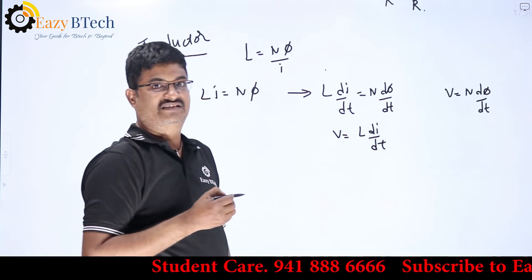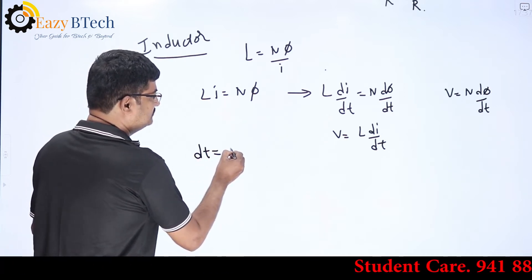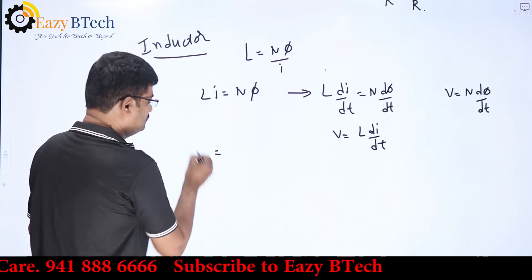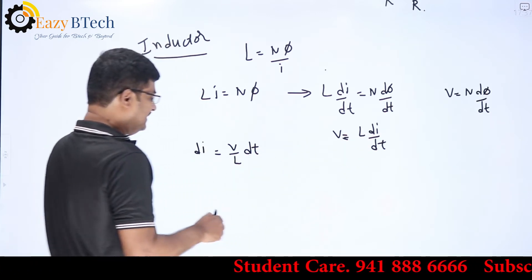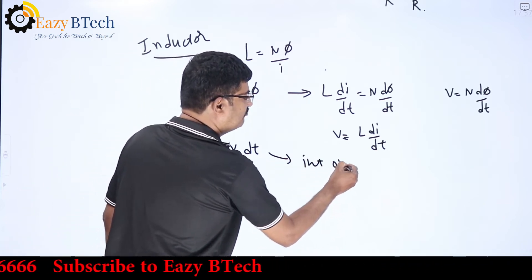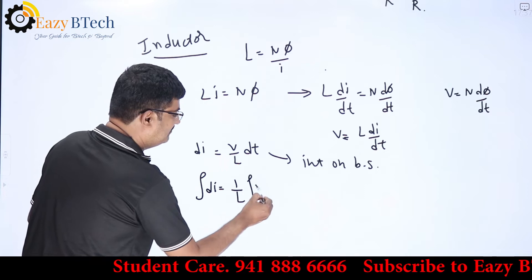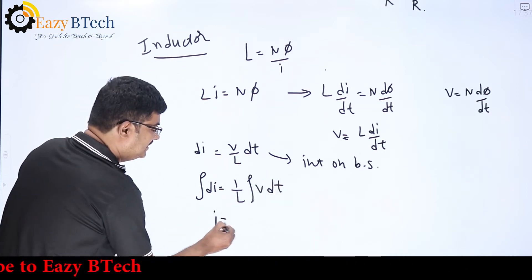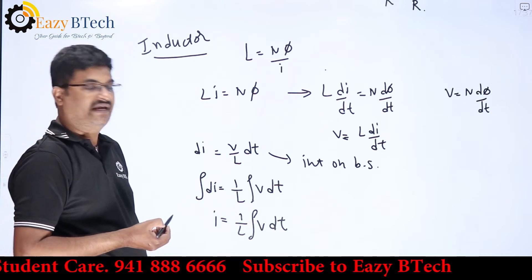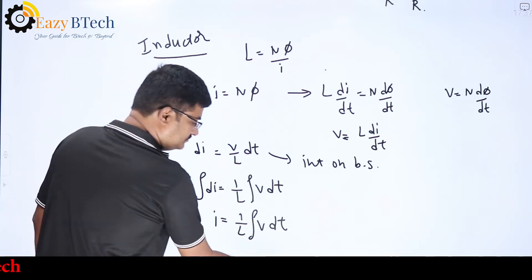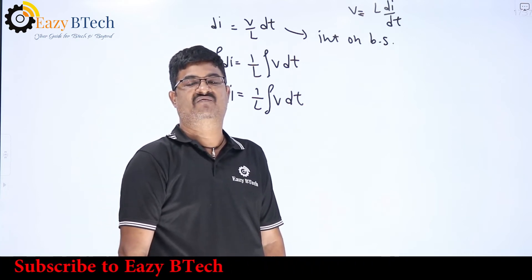The voltage across the inductor is v = L·di/dt. Rearranging: di = (v/L)·dt. Integrating both sides, the current equation is i = (1/L)·∫v dt. This is the expression for current in an inductor. The inductor is a storage device — it stores energy and opposes the change in flux or current.